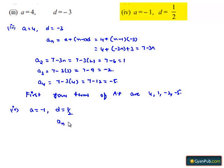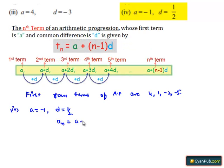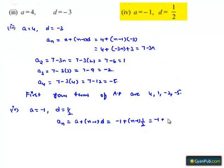Therefore, the nth term aₙ equals a plus (n-1) times d, which is -1 plus (n-1) times 1/2. This equals -1 plus n/2 minus 1/2.